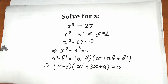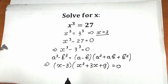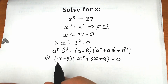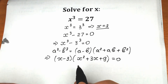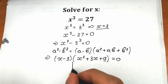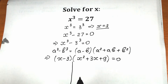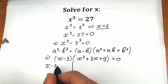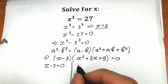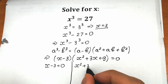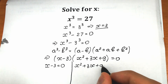As you can see, we have a product of two parentheses equal to 0. A product of two factors equals 0 when the first factor equals 0 or the second equals 0, so we will have two cases. From the first: x minus 3 equals 0. From the second: x squared plus 3x plus 9 equals 0.